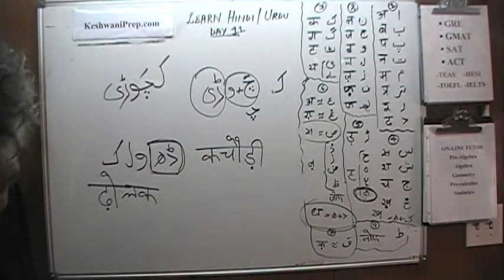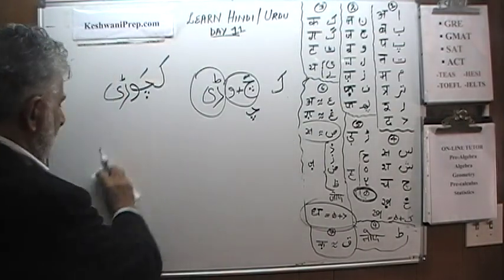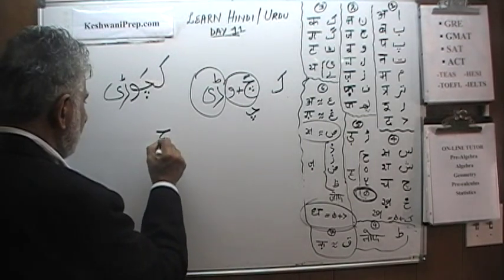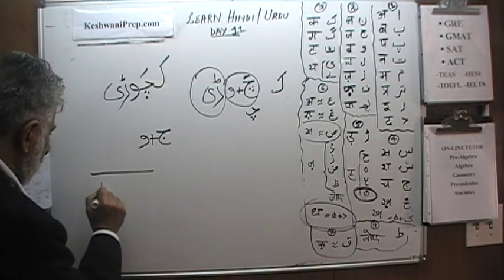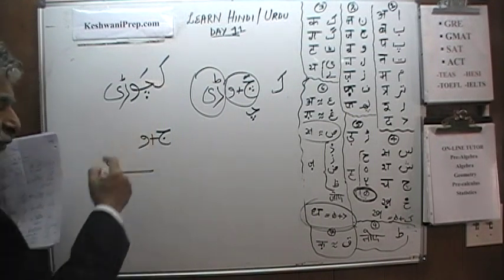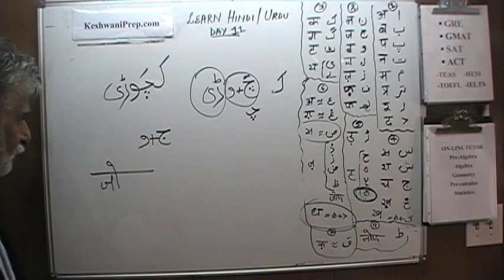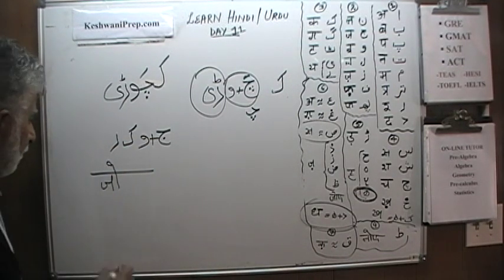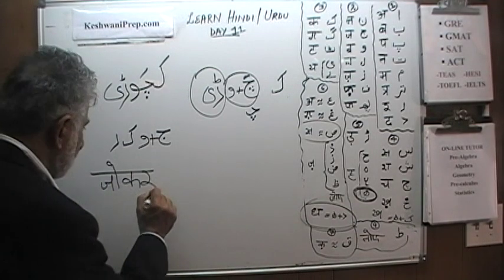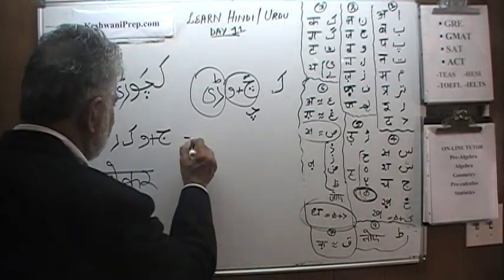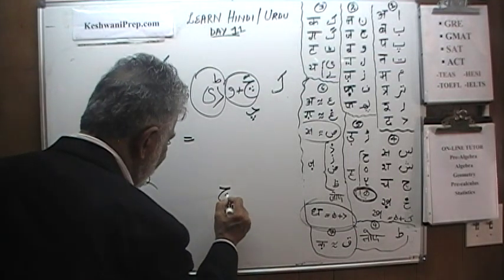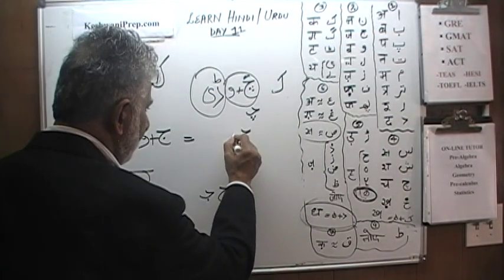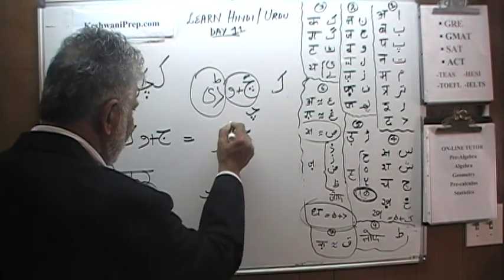Let's do the next one — Chhoti Oki Matra. Jeem and a Vav, so that's Jo — no Zabar, so it's Chhoti Oki Matra. Then Ka and Ri — Joker. In Urdu, Jeem when it's about to join something becomes this short form, and it joins the Vav. Then Kaaf and Ri — Joker.